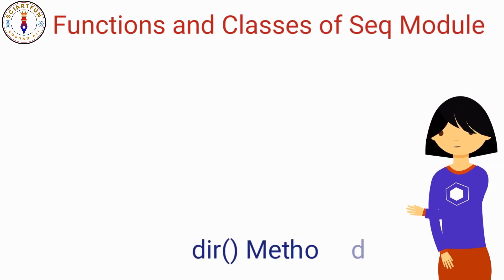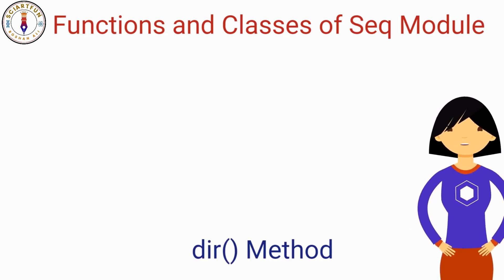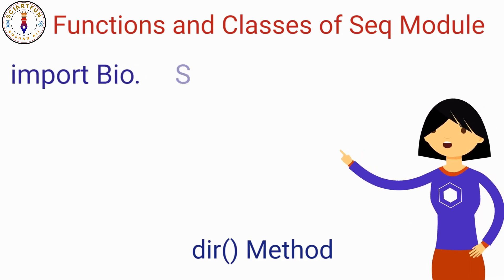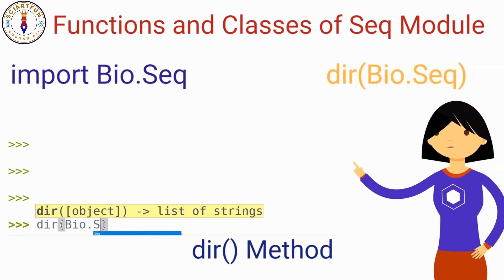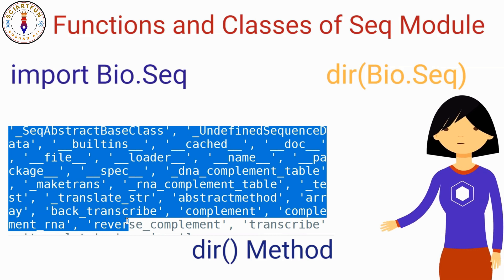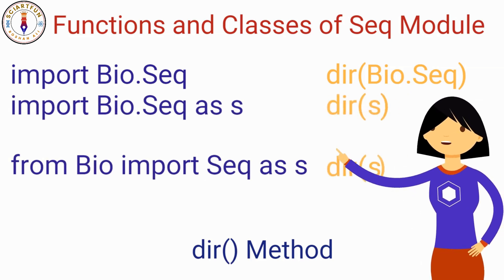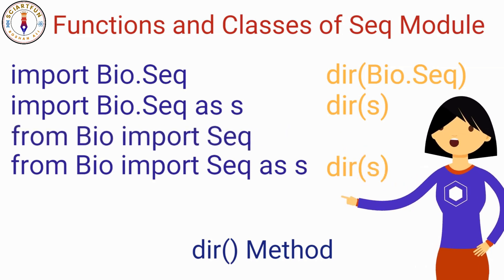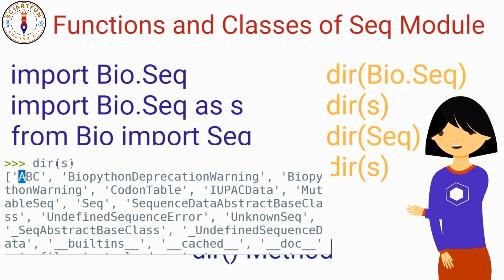Now let me show you the DIR method to see these things. In this method, you use the dir() function to see all the classes, functions, and modules attached to the seq module. If you used method A, type the corresponding dir command and hit enter. If you used method B or D, type the appropriate dir command and hit enter — everything it contains will be displayed. If you used method C, type this command. You can see the practical usage in this window.